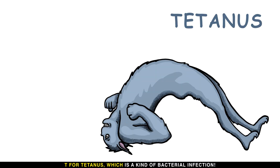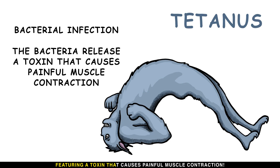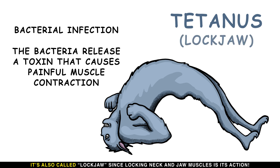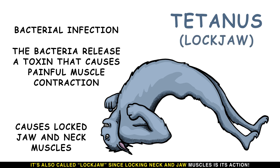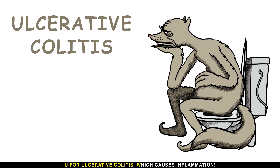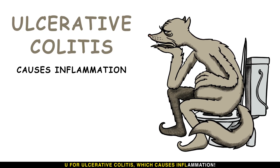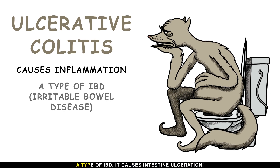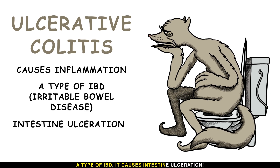T is for tetanus, a bacterial infection featuring a toxin that causes painful muscle contractions. It's also called lockjaw since locking of the neck and jaw muscles is its main action. U is for ulcerative colitis, a type of IBD that causes inflammation and intestinal ulceration.